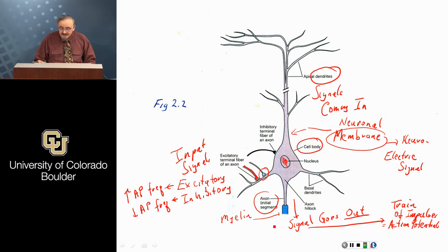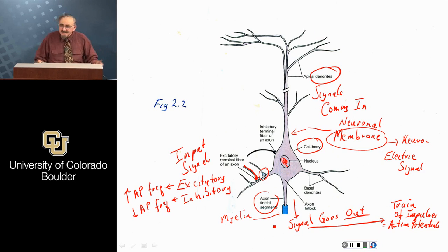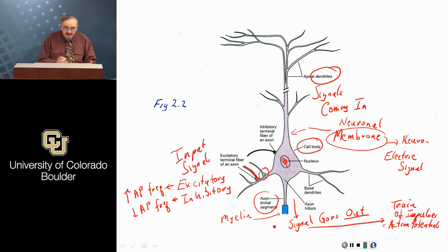The more complicated these rapid responses are — rapid in the neural context means some fraction of a second, not nanoseconds as in a computer — the more you need axons that are either large in diameter, as in the squid, or coated with myelin. We'll see why that's the case.